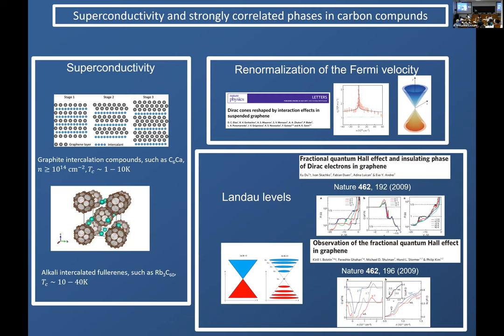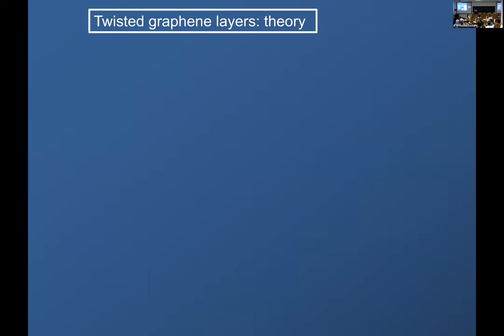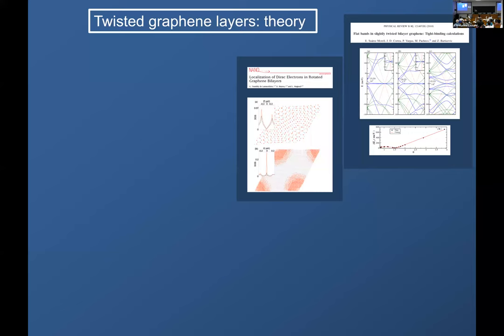But that was it. Definitely superconductivity had never been found in graphite. I mean there were reports, but not very credible to say the least, of superconductivity in graphite. They have been repeated very recently, but there was no clear evidence for strongly correlated behavior or superconductivity in graphite.